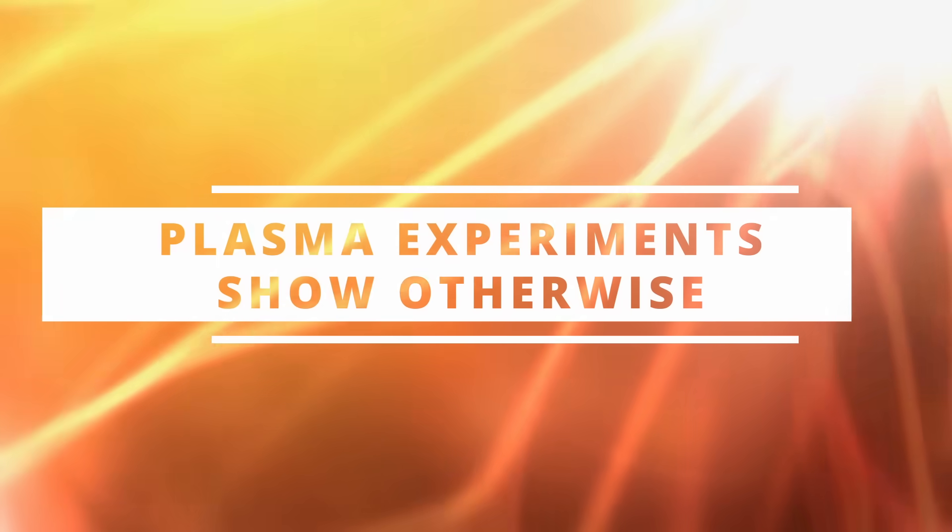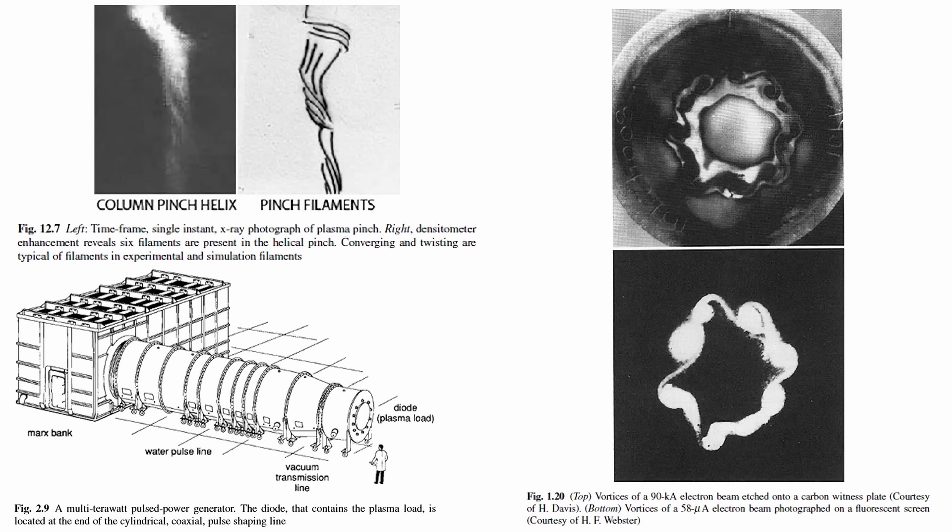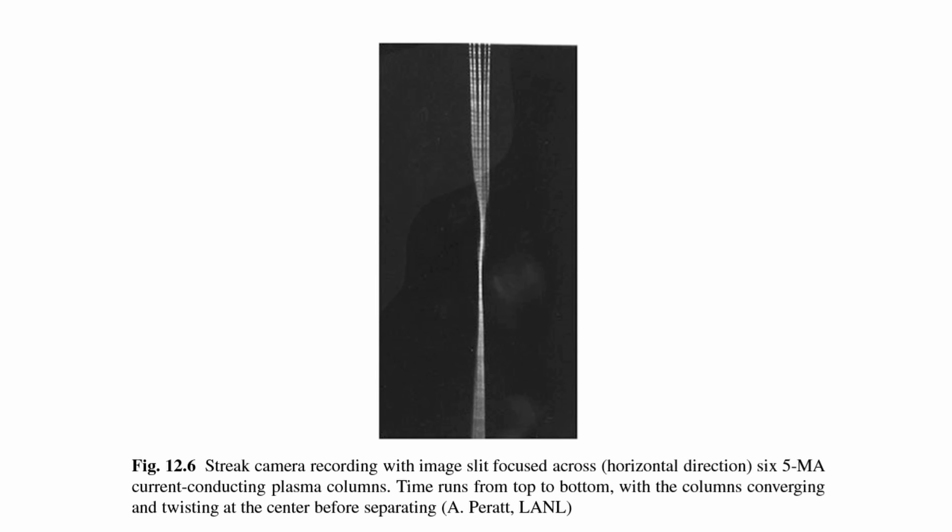In the laboratory, plasma tells a very different story. When researchers created plasma discharge in controlled experiments, they don't see it behave like a neutral gas. They see it self-organize. Currents in the plasma quickly form long, narrow filaments. These filaments are stable, they are elastic, and they even form intricate networks of branching and reconnecting threads.